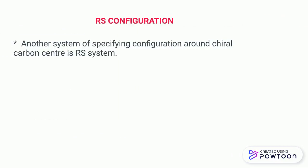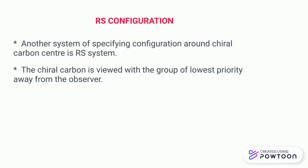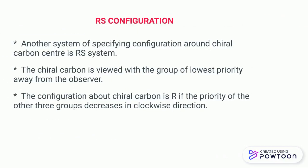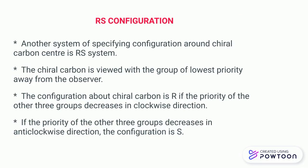Now we will discuss about the RS configuration. RS configuration is another system of defining the configuration of amino acids. The chiral carbon is viewed with the group of lowest priority pointing away. The lowest priority group is the group which has the lowest atomic number.